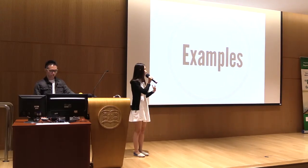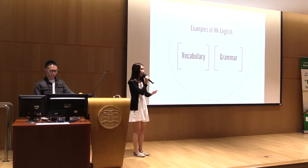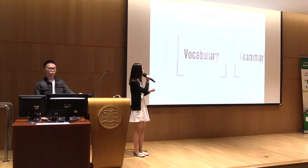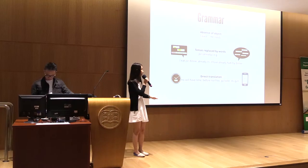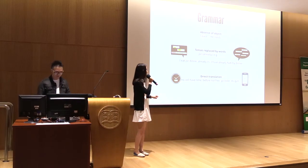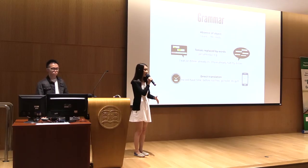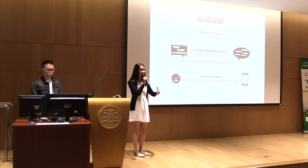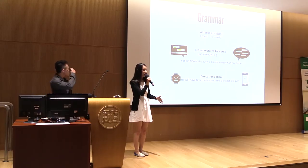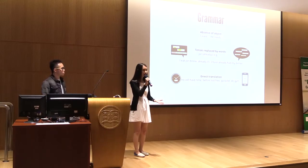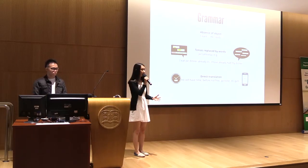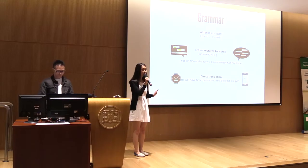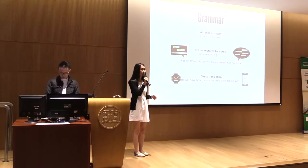Let's look at examples of Hong Kong English, divided into vocabulary and grammar. In terms of grammar, we identified three aspects. First is the absence of objects, like 'I want' or 'he needs.' Imagine a teacher asks: 'Who wants an ice cream?' Hong Kong people would likely say 'I want' rather than 'I want an ice cream,' because this pattern is allowed in Cantonese grammar and reflects a direct translation.